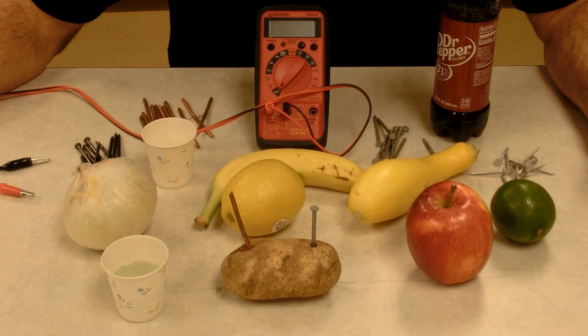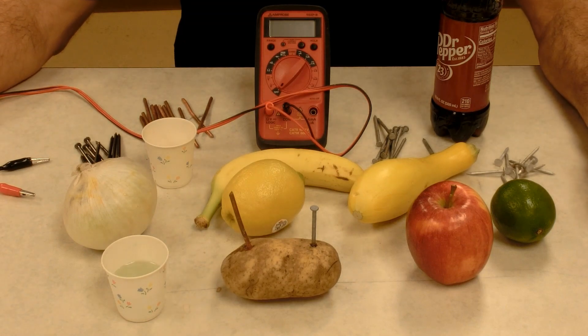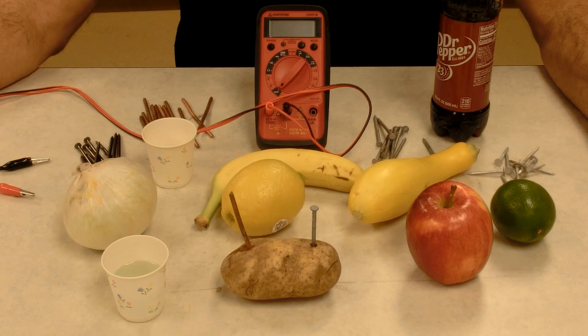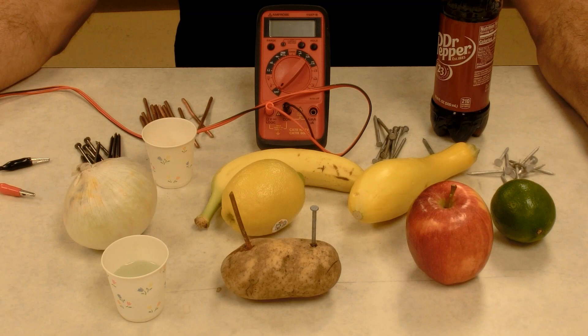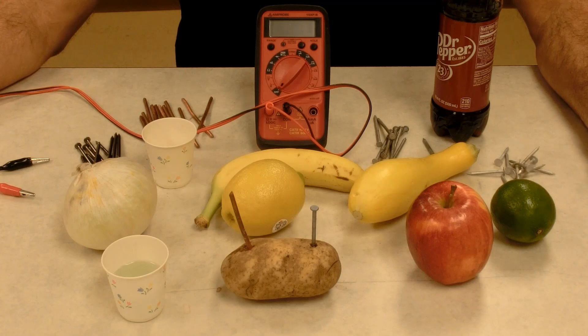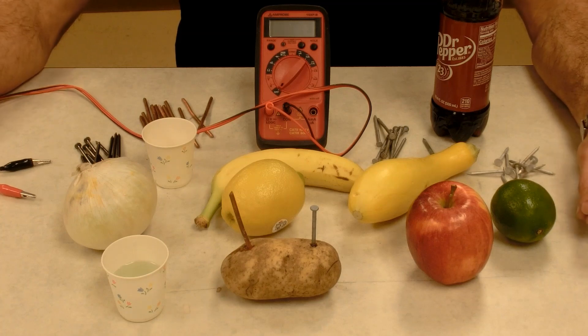He knew to make a battery you needed two different metals separated by some kind of conducting solution. We call the conducting solution an electrolyte. So he wanted to test different materials to see what would make the best battery. You want something that's powerful, that's long-lasting, that's inexpensive, and that's safe. So he sent his assistants all over the world testing and gathering materials to see what would make the best battery.